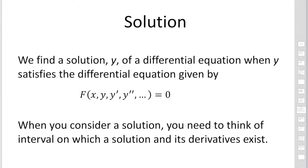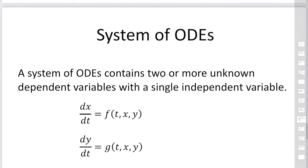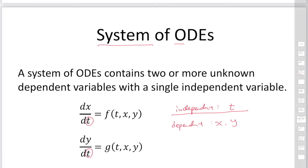Next, solutions. We find the solution y of a differential equation where y satisfies the original differential equation. When considering solutions, you also need to think of an interval on which a solution and its derivatives exist. Regarding systems of ordinary differential equations: ODEs consider a single independent variable — for example, t — but we can have two dependent variables, x and y. In this case, we call it a system of ordinary differential equations. A system means two or more equations.